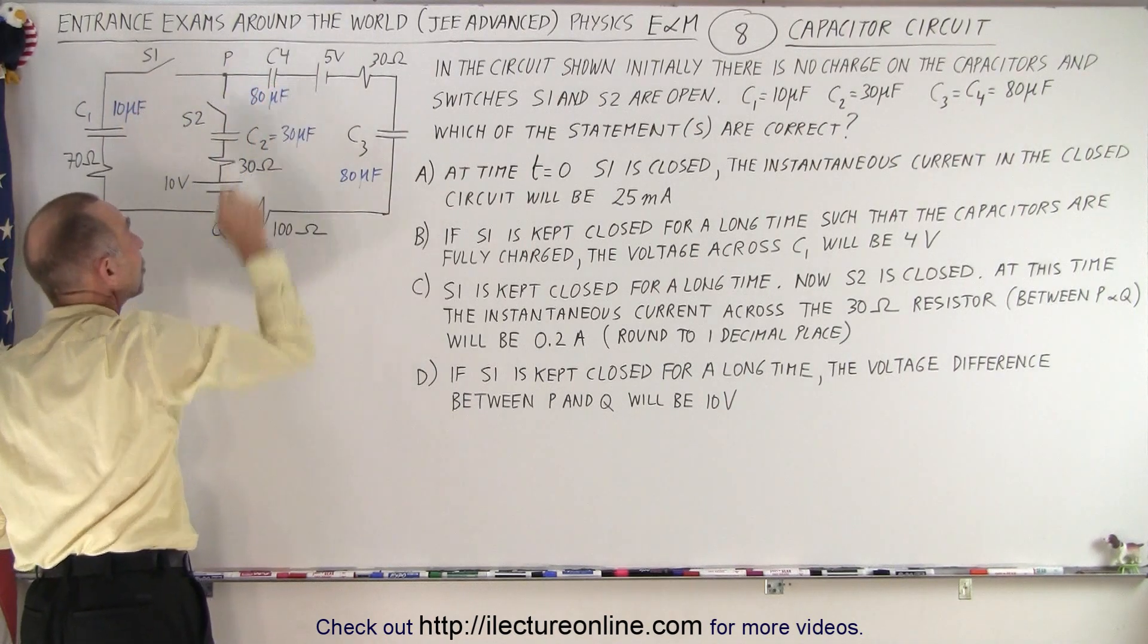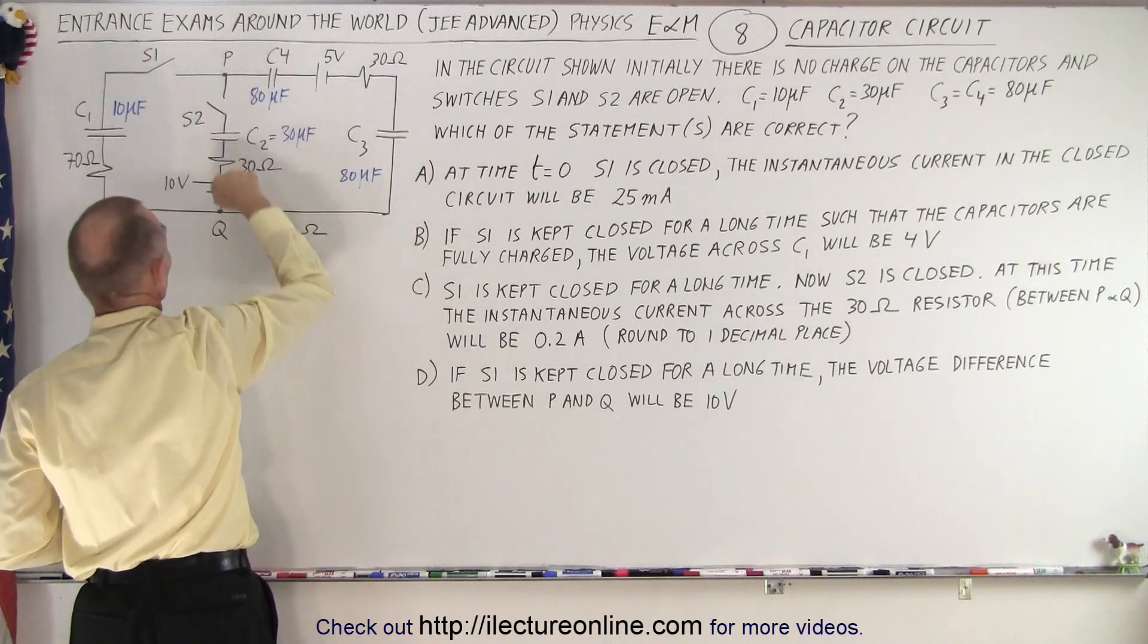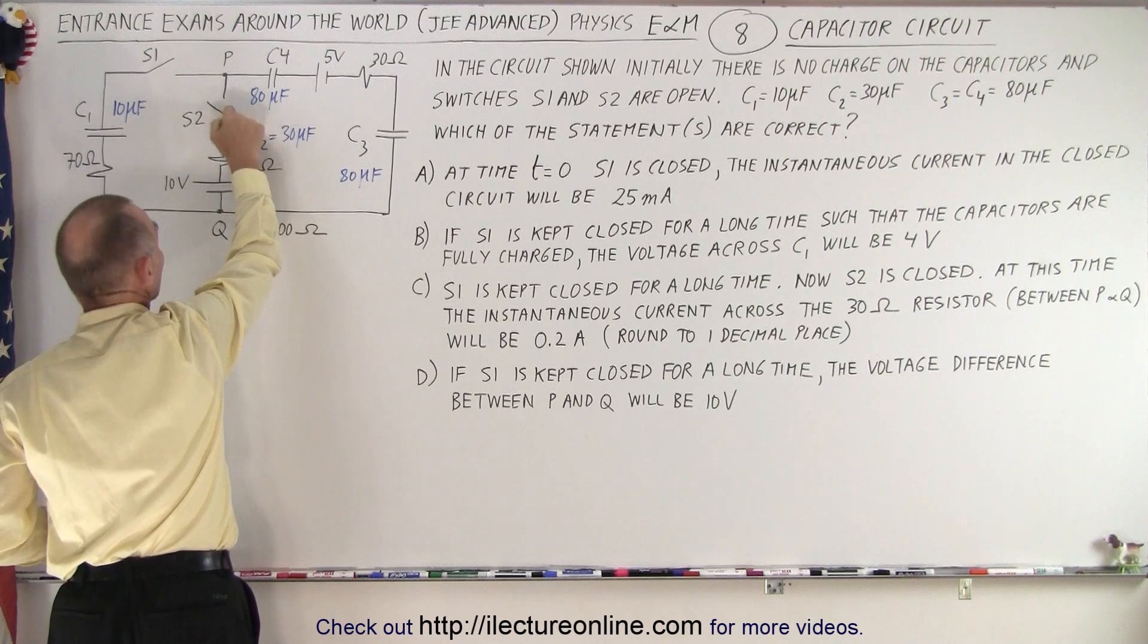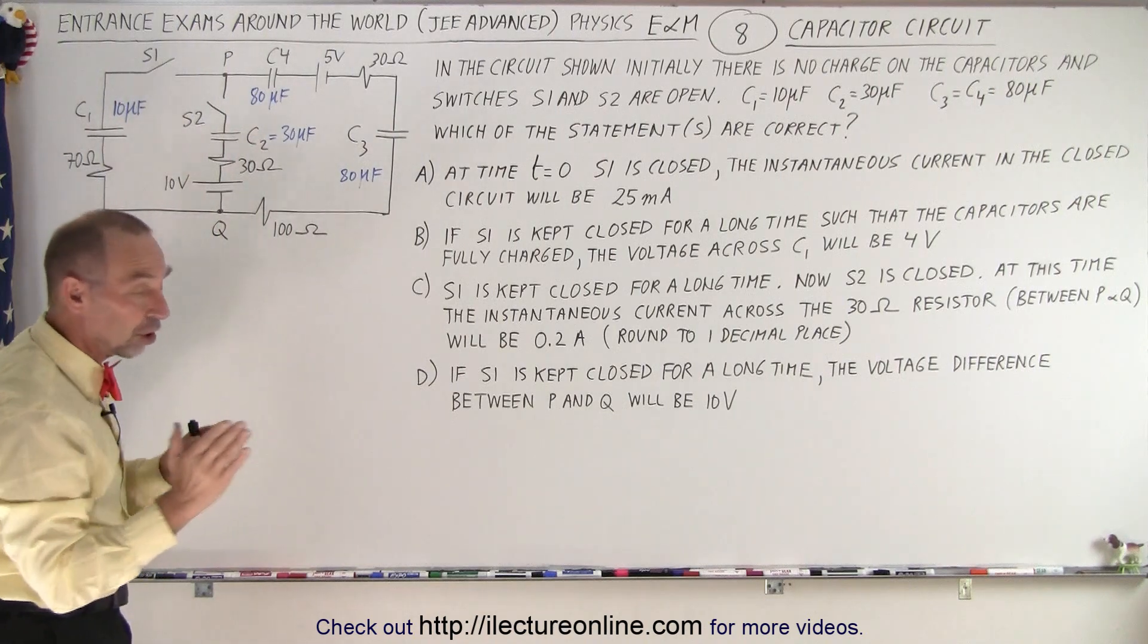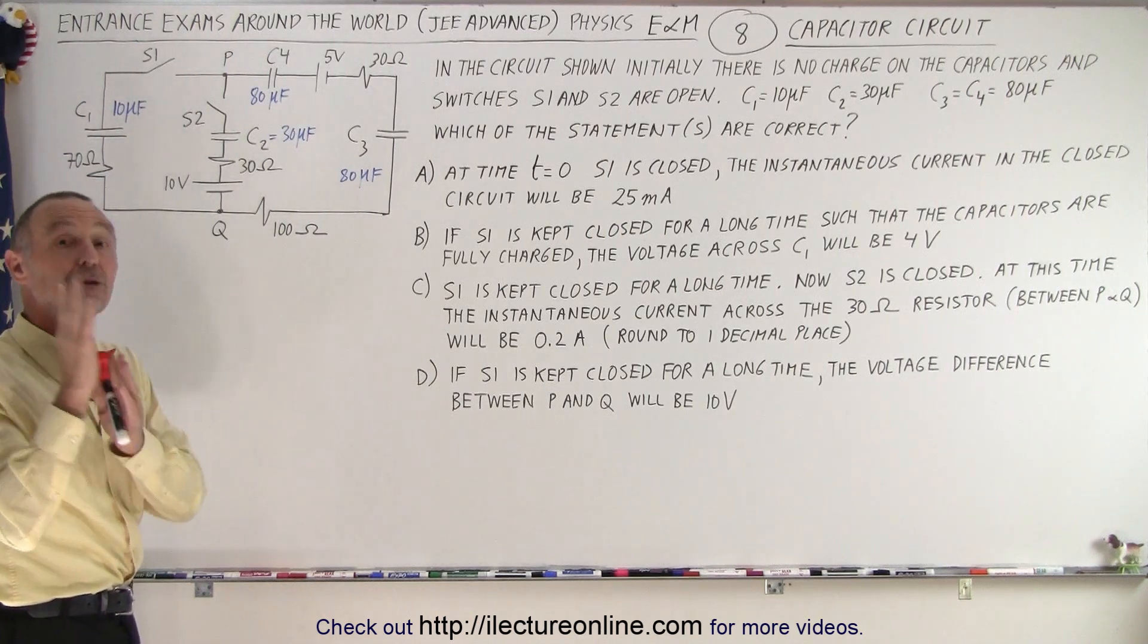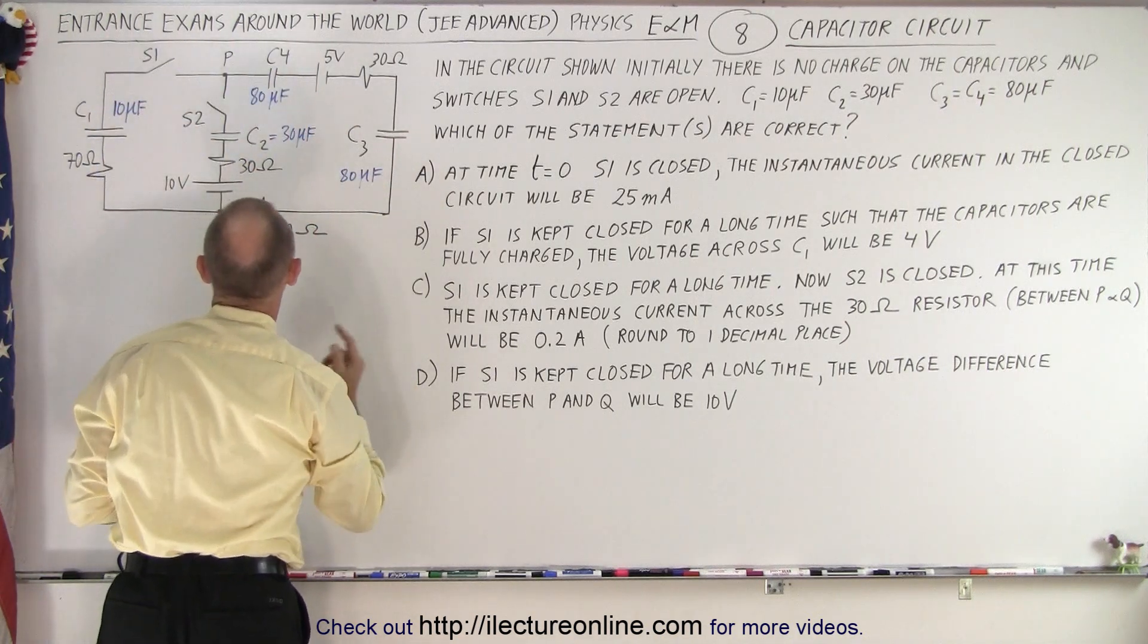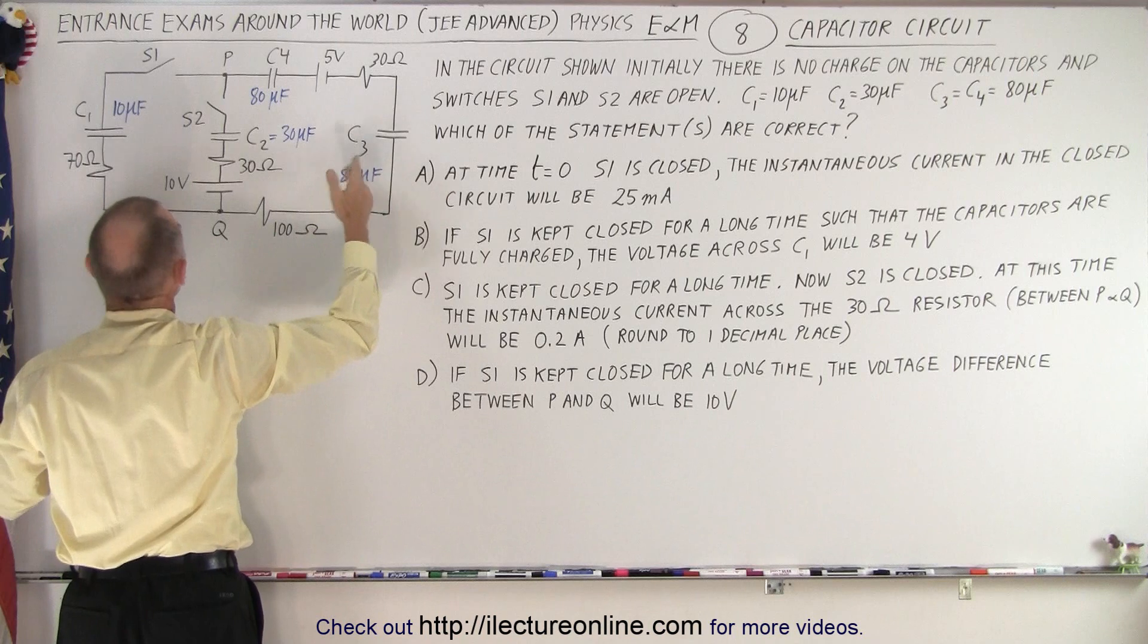So the moment the switch closes, none of the capacitors have any charge on them. There's only one battery in the entire closed circuit. This branch will have no current in it, even though it has a 10-volt battery, because it's an open circuit. When capacitors are not charged and the circuit closes and current begins to flow, those capacitors act like closed circuits. In other words, it's like there is no capacitors there.